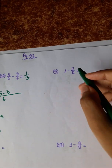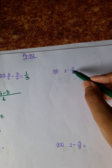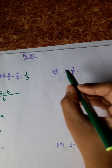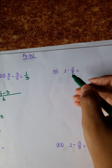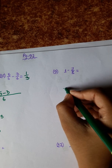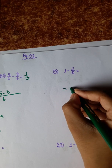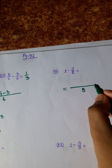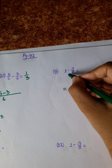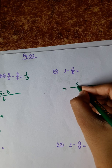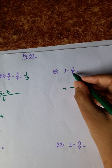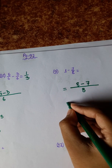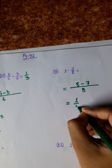Next: integer minus fraction. We convert the integer to a fraction 1 by 1. The LCM with 8 is 8. 8 divided by 8 equals 1, and 1 into 7 equals 7. So 8 minus 7 equals 1. The answer is 1 by 8.